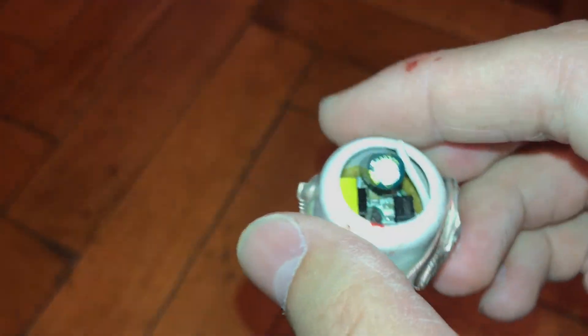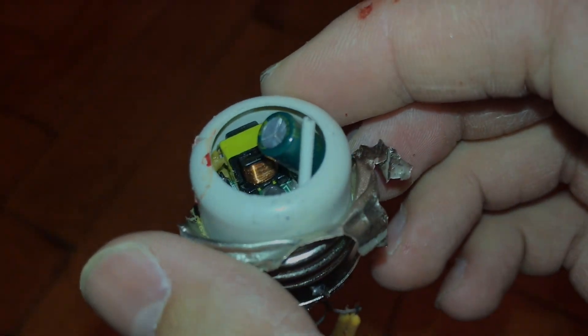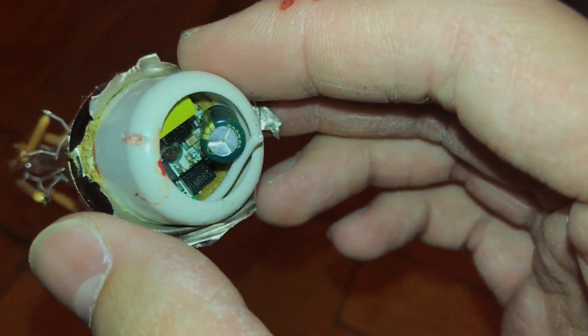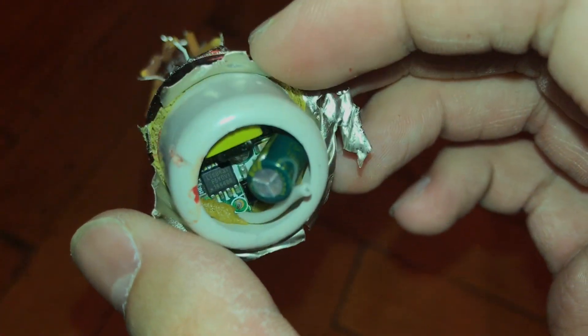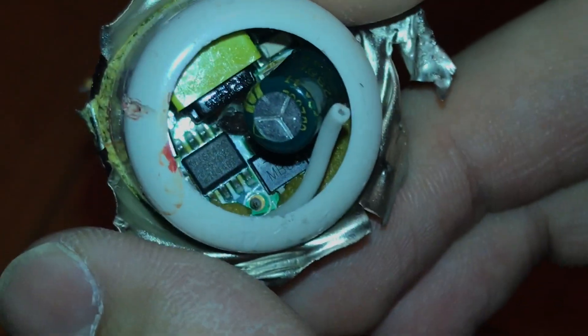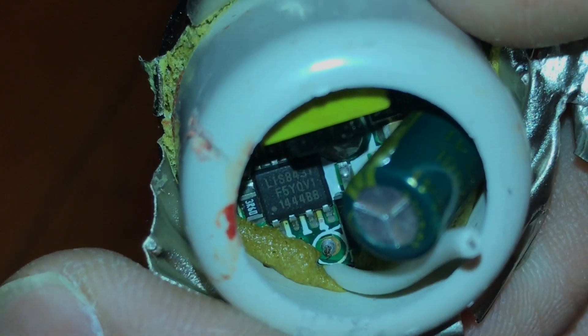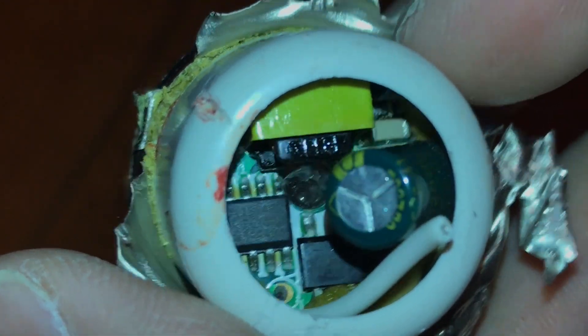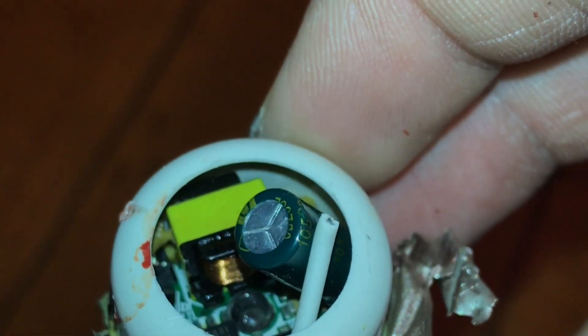The power supply looks to me like a buck type converter. So we have a bridge rectifier there, a chip, the number of which you probably can see if I zoom in a bit. There we go. So that's the chip and what looks like an inductor.